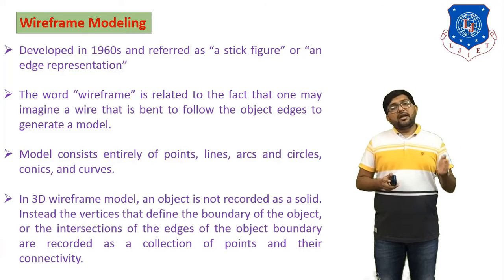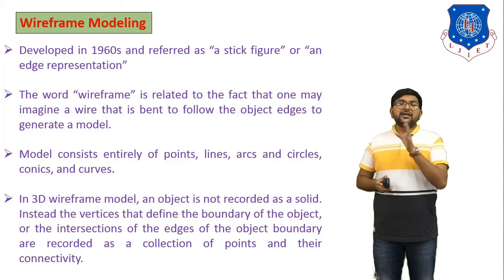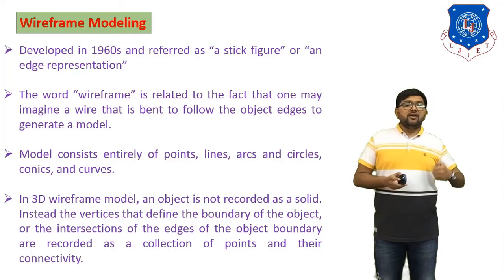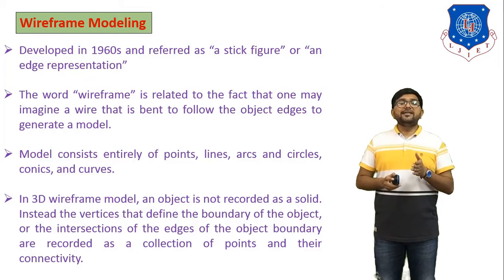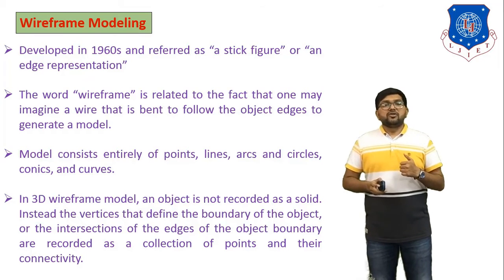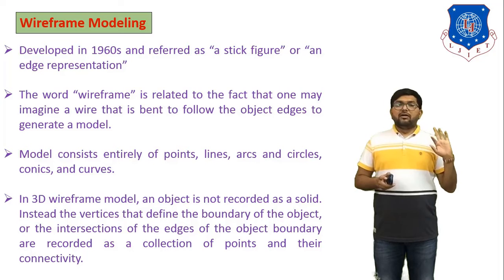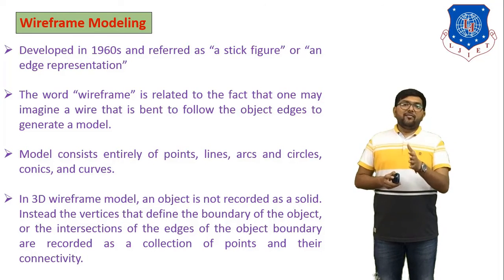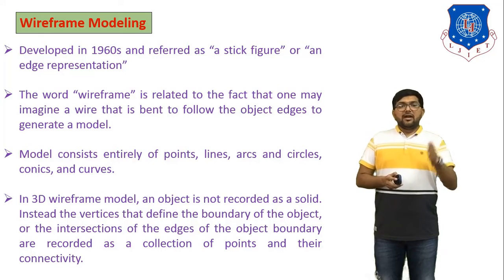In 3D wireframe modeling, an object is not recorded as a solid. Instead, vertices that define the boundary of the object or the intersection of edges of the object boundary are recorded as a collection of points and their connectivities. So in wireframe modeling we define the connectivity of entities like lines, circles, coordinates, or points.